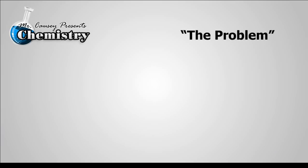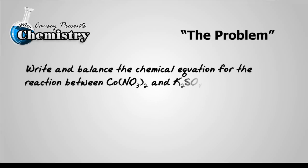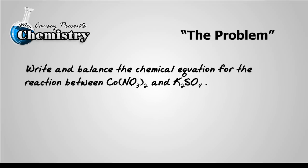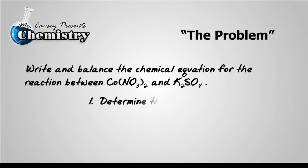Alright, the problem. Write and balance the chemical equation for the reaction between cobalt 2 nitrate and potassium sulfate. Now, those are our reactants, so what we need to do is determine the product, write the products, write the equation, and then balance it.